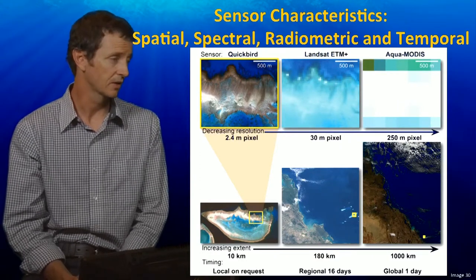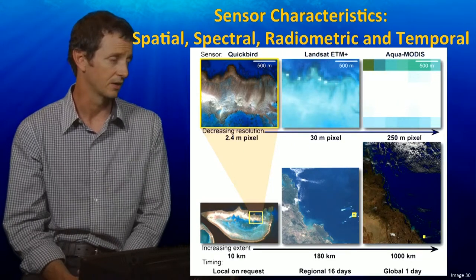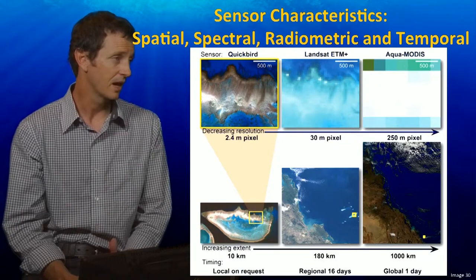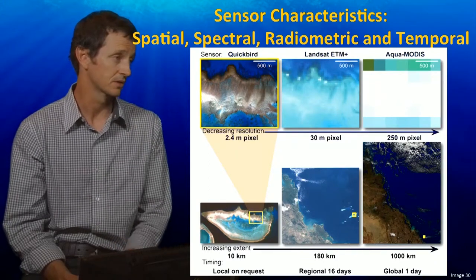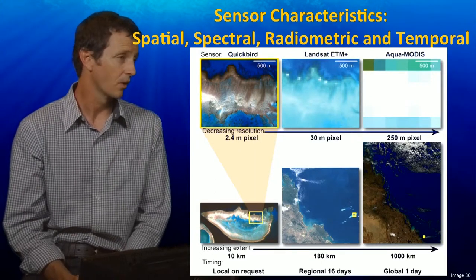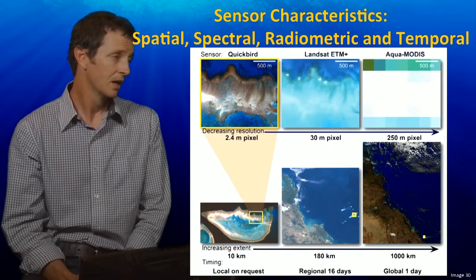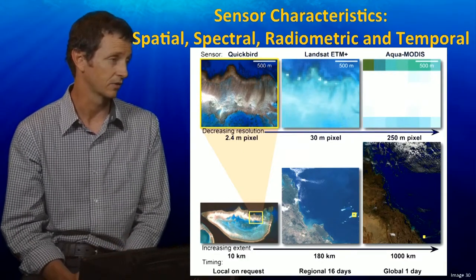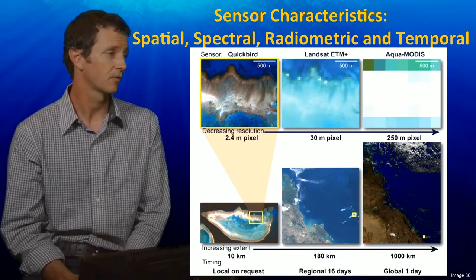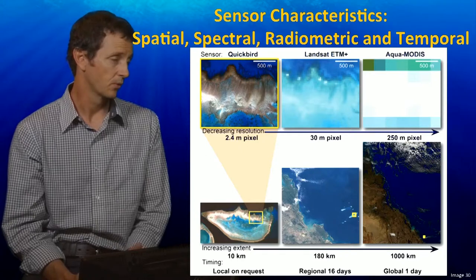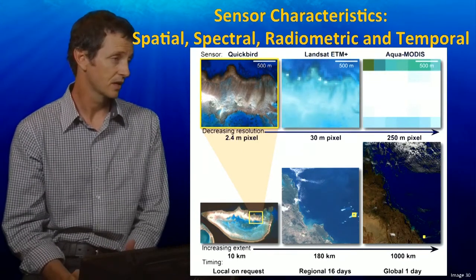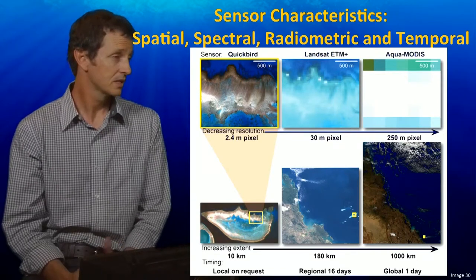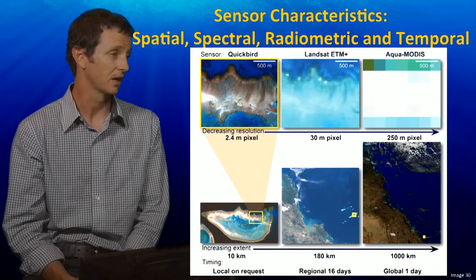These are a series of images collected over Heron Reef and its surrounds on the Great Barrier Reef in Australia. The image on the far left is captured from a high spatial resolution low Earth orbiting satellite, with a pixel size of around 2.4 metres. The next image is from the Landsat Enhanced Thematic Mapper satellite, with pixels of around 30 metres covering 185 by 185 kilometres roughly every 14 days. The image on the far right is from the MODIS sensor on board two NASA satellites — 2,500 kilometres wide with pixel sizes from 250 metres to 1 kilometre.